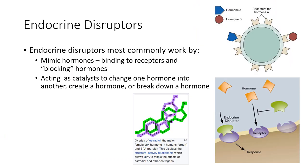How do endocrine disruptors work? Most of them mimic hormones — they can bind to receptors where a hormone would typically bind. Looking at estradiol with BPA: BPA can easily bind to any estrogen receptor at the active site because it very closely mimics estrogen. They can therefore block hormones or overexpress a certain hormone. They can also act as catalysts to change one hormone into another, create a hormone de novo, or break down a hormone — essentially anything to do with reacting with or mimicking hormones in the body.